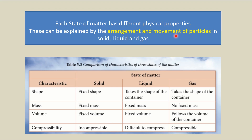Each state of matter has different physical properties. This can be explained by the arrangement and movement of particles in solid, liquid and gas. For example, the shape of a solid — solid has a fixed shape. Whereas liquid takes the shape of the container, and gas also takes the shape of the container. All of this can be explained by the arrangement and movement of particles in the three states of matter.